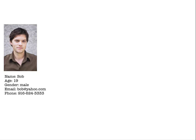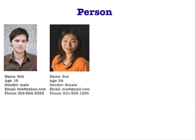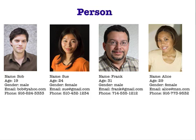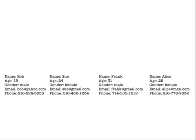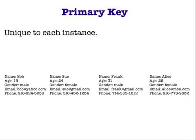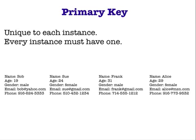Because we can describe Bob with attributes that make Bob unique, Bob is an instance of an entity we shall call a person. The person entity along with its attributes can be used to describe many persons. Here's Sue, Frank, and Alice. They all share the same set of attributes, but the actual values may be different. Every entity needs an attribute that uniquely identifies each instance of that entity. We need to find an attribute of a person that allows it to identify each and every person separately.